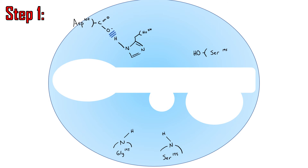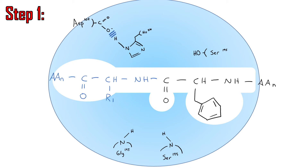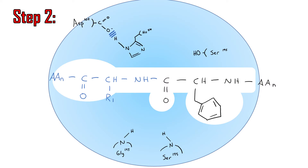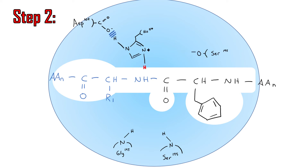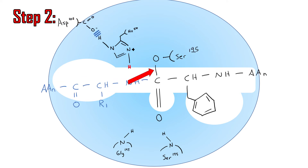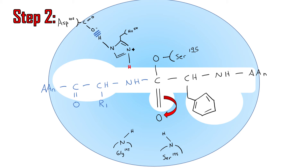Step one: the substrate slides into the hydrophobic pocket of chymotrypsin. Step two: serine and histidine interact. Histidine snags the hydrogen from the serine, which makes the serine super reactive — we called this a nucleophile. The oxygen, being highly reactive, bonds to the carbonyl group through covalent catalysis. The double bond slides down to the oxygen, making it negative, and the hydrogen is stabilized by serine 195 and glycine 193. This forms our enzyme-substrate complex.